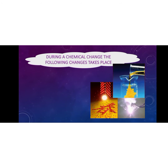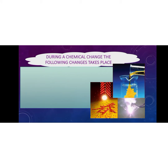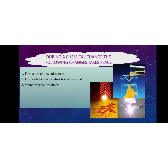During a chemical change, the following changes take place: formation of new substances, heat or light may be absorbed or released, sound may be produced, a color change may take place, a change in smell may take place, and a gas may be formed.